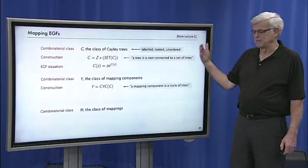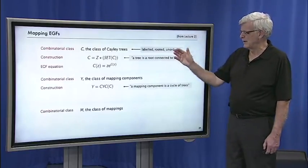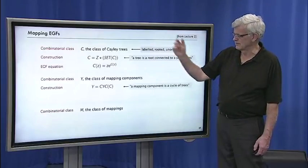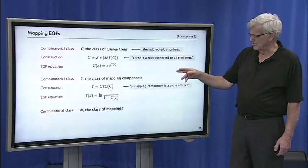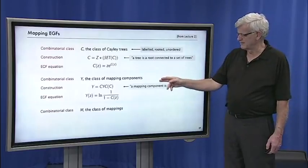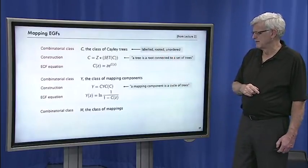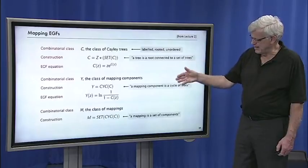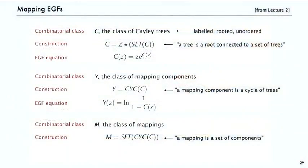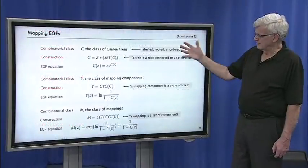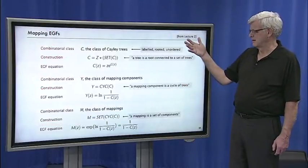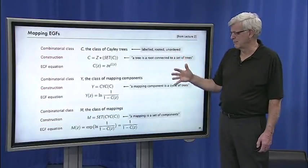A component in a mapping is a cycle of trees. So Y equals a cycle of trees, where C is a class of trees. So Y is log of 1/(1-C(z)), where C(z) is defined that way. And then a mapping is a set of cycles of trees, a set of mapping components. And that translates to the EGF equation, e^(log(1/(1-C(z)))), or 1/(1-C(z)). So that's the basic structure of the symbolic method for mappings.